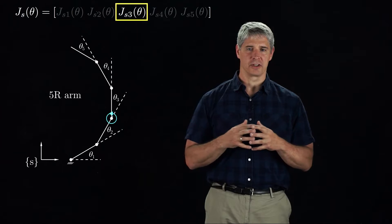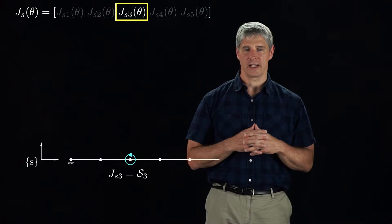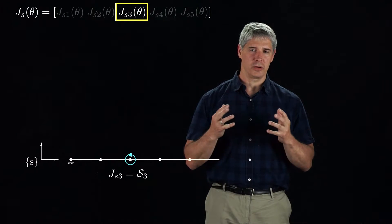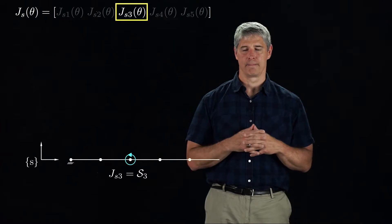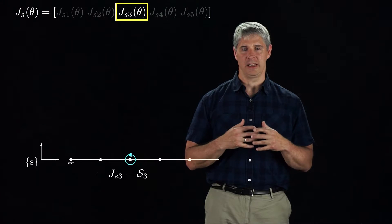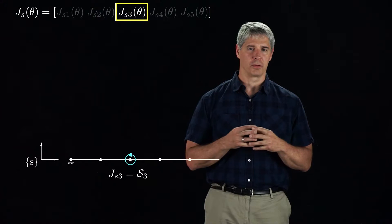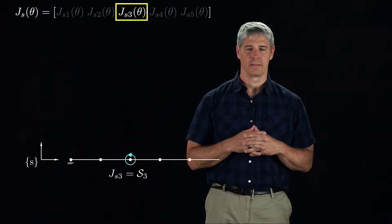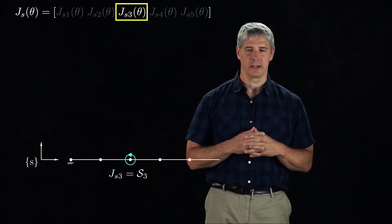If all joint angles are 0, then Js3 is simply S3, the screw axis of joint 3 when the arm is at its zero configuration. We use this in Chapter 4 for the product of exponentials formula in the S-frame. To find the column of the space Jacobian, though, we need the spatial twist corresponding to unit velocity at joint 3 when the robot is at an arbitrary configuration, not just the zero configuration. So let's start moving the joints of the robot and see how that affects Js3.